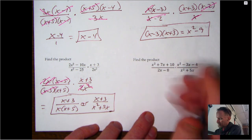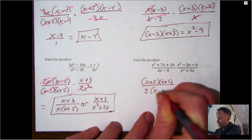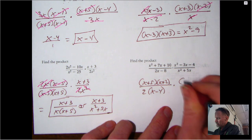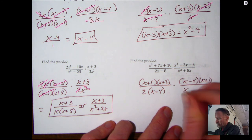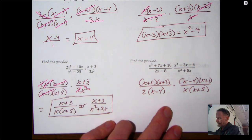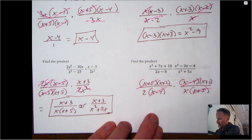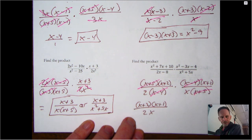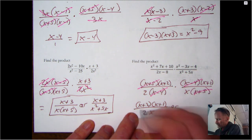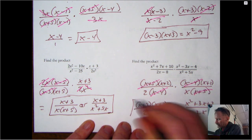For the last multiplication example: the top of the first fraction factors to (x+5)(x+2) — multiply to 10, add to 7. The bottom has a GCF of 2. The second fraction's top factors to (x-4)(x+1), and the bottom has a GCF of x, giving x(x+5). Cancel the (x+5)s and (x-4)s. What's left is (x+2)(x+1) over 2x, which can also be written as (x²+3x+2) over 2x.